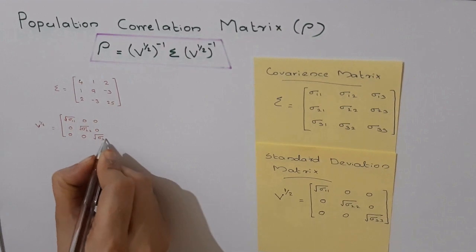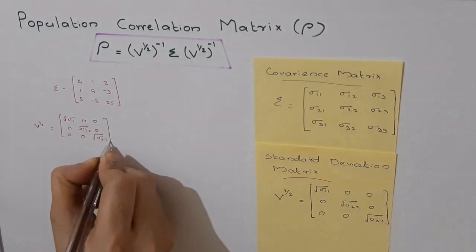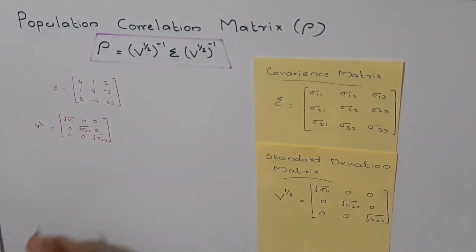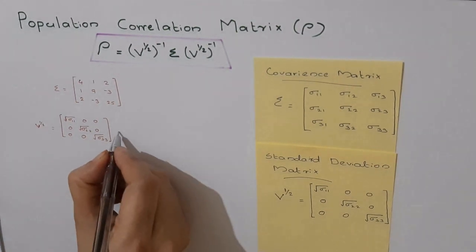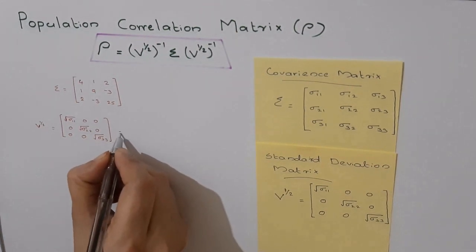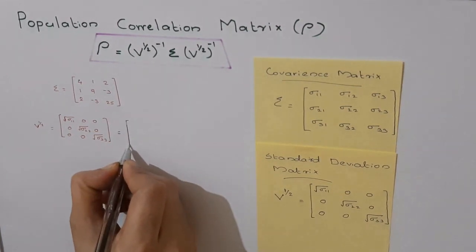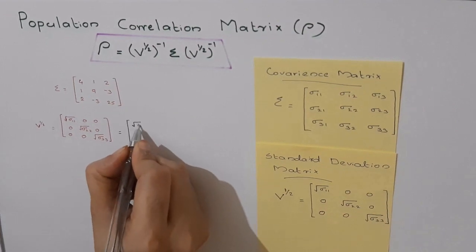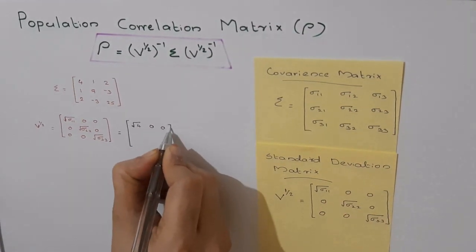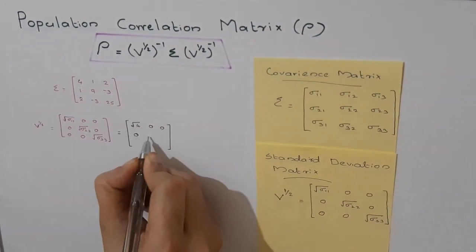Substituting values from the given covariance matrix, we will get the matrix [√4, 0, 0; 0, √9, 0; 0, 0, √25].